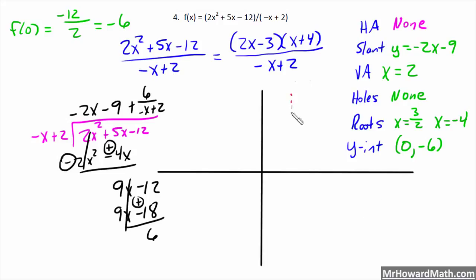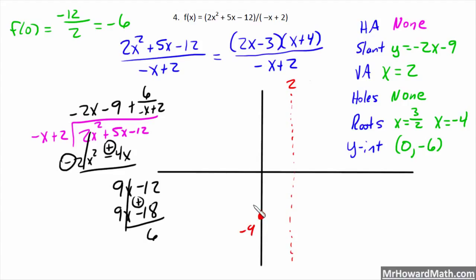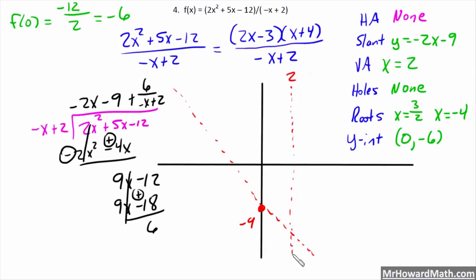So, vertical asymptote at x equals 2. Put that in here. x equals 2. Slope intercept, or slant intercept, negative 2x minus 9. So, y-intercept, put it down here at negative 9. And then, the slope is down to over 1. So, we'll plot that in here like this. So, we're going to need to scroll down some.